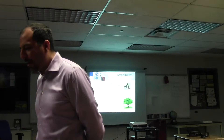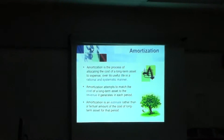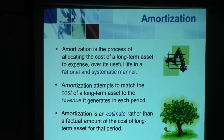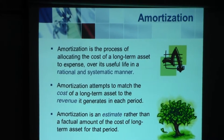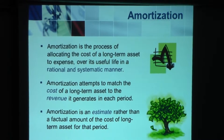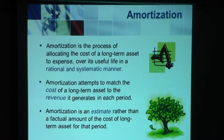We will continue our lessons on adjustments and adjusting entries. Today the focus will be on amortization. I had briefly talked about amortization at the end of yesterday's lesson. To summarize, amortization is a type of expense where we allocate an asset's cost over its useful life — we take the useful life and amortize the asset over a number of years.